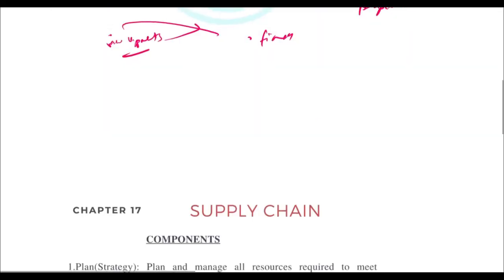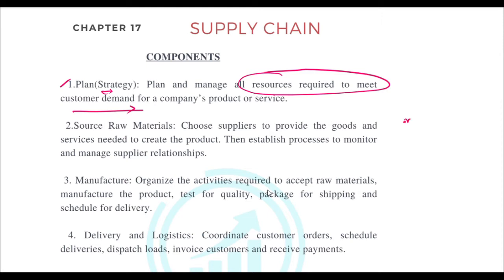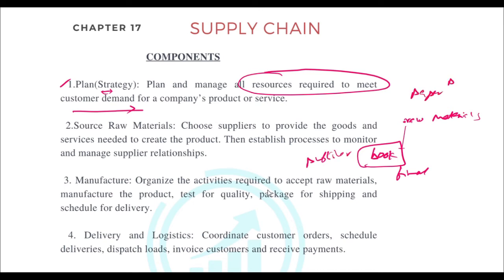The important components begin with Plan. You need a plan and strategy for what resources are required to meet customer demand. You need to plan what raw materials are needed to deliver the final product. For example, if you are a publisher writing a book, you need good paper and good printing quality — these are your raw materials — and you need to plan how to turn them into the final product.